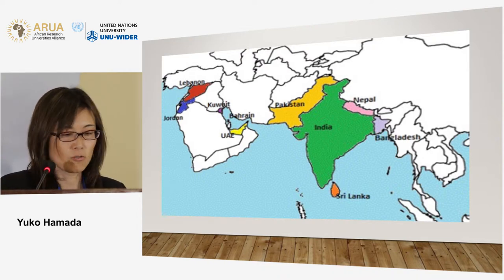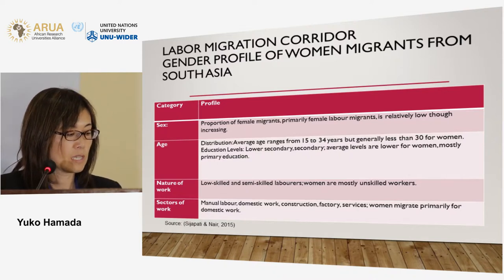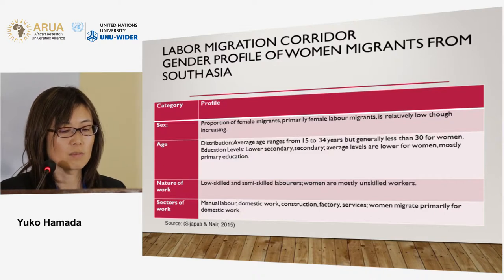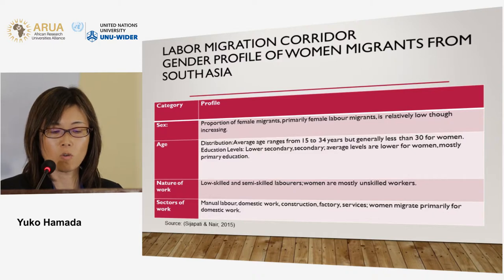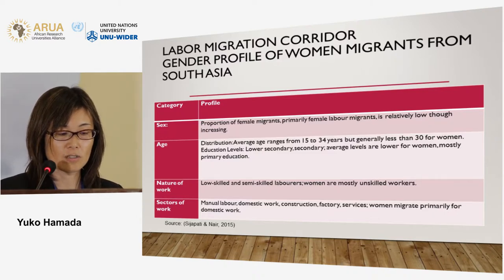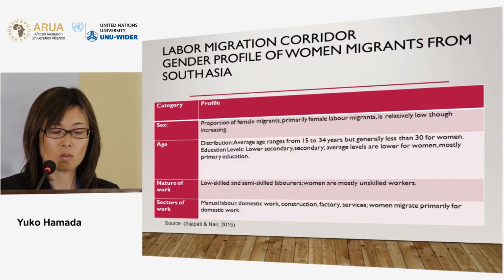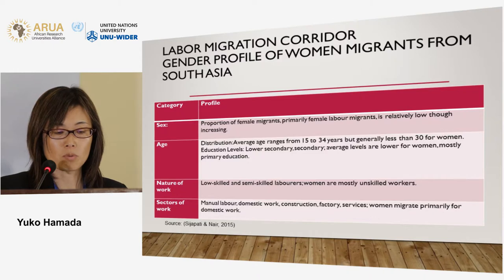What kind of profile are we looking at? These women migrant workers are most vulnerable. The average age ranges from 15 to 34 years, but generally less than 30 for women. Education levels are lower secondary to secondary on average, with women mostly having primary education. In terms of nature of work, they are low-skilled and semi-skilled laborers — women are mostly unskilled. Sectors include manual labor, domestic work, and in some cases construction, factories, and services. Women migrate primarily for domestic work.